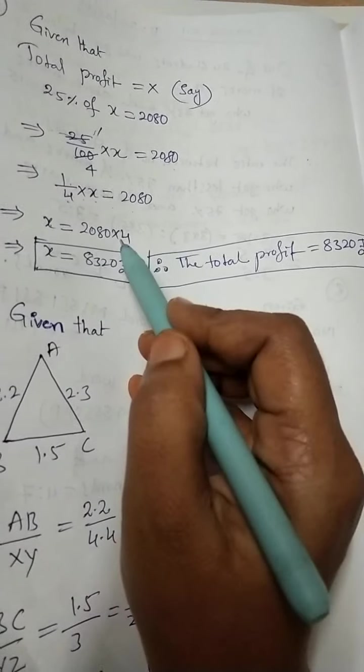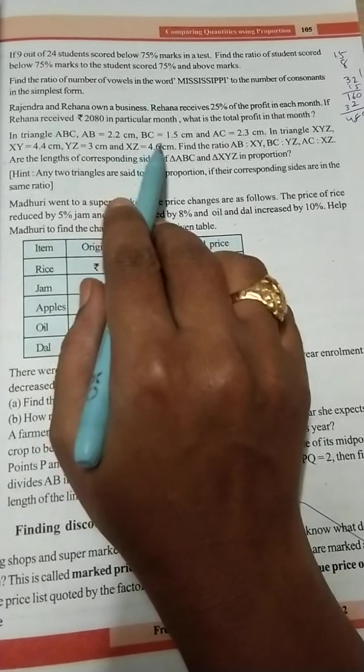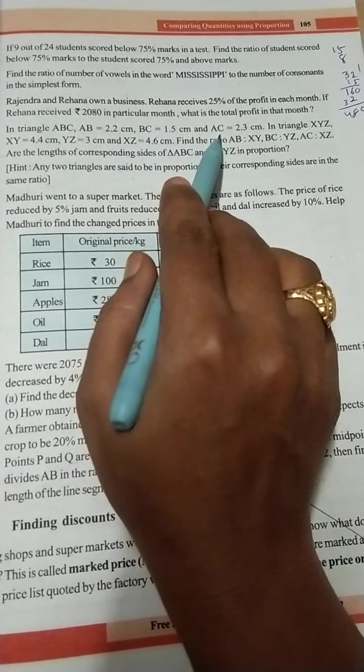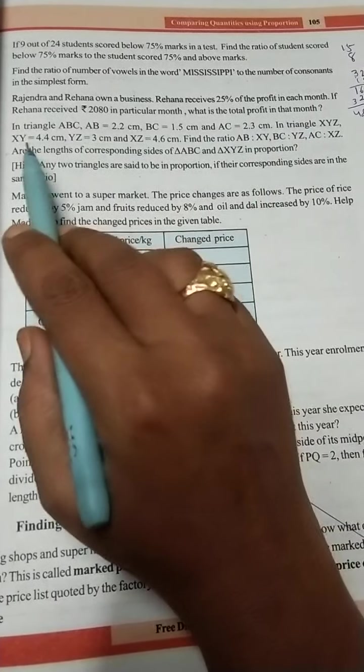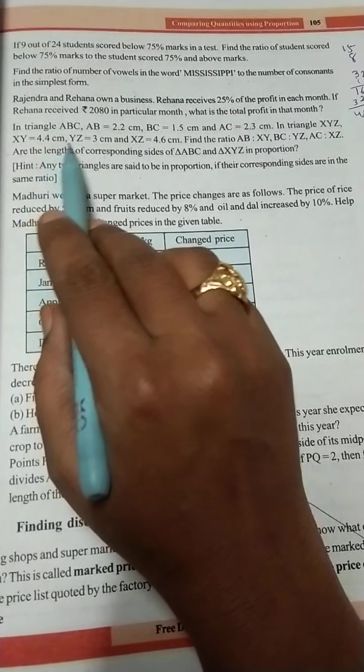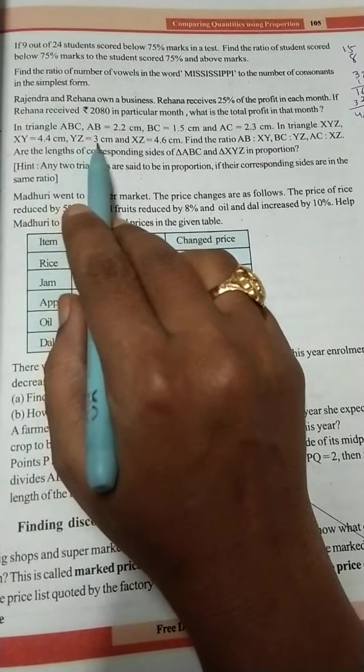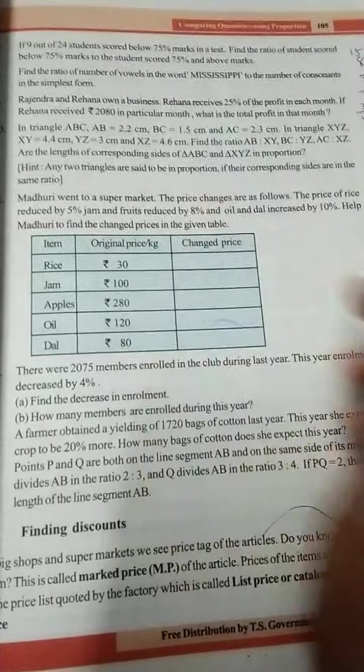Next question, in a triangle ABC, AB 2.2 cm, BC 1.5 cm, and AC 2.3 cm. In triangle XYZ, XY 4.4 cm, YZ 3 cm, and XZ 4.6 cm. Find the ratio AB is to XY, BC is to YZ, AC is to XZ. Are the lengths of the corresponding sides of triangle ABC and triangle XYZ in proportion? We need to find out.